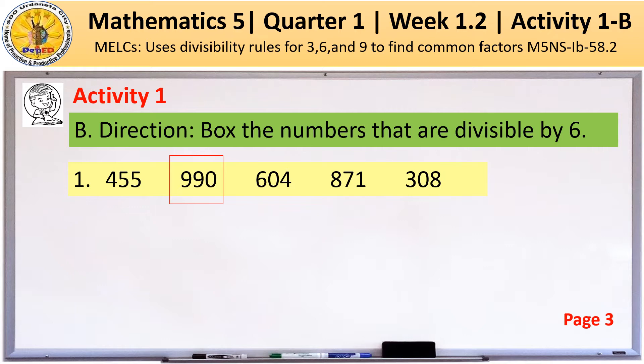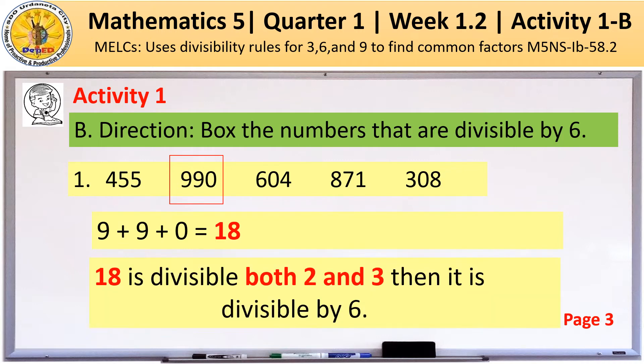Following the divisibility rule for 6, a number is divisible by both 2 and 3. We're going to add 9 plus 9 plus 0 is equal to 18. So, 18 is divisible both by 2 and 3.